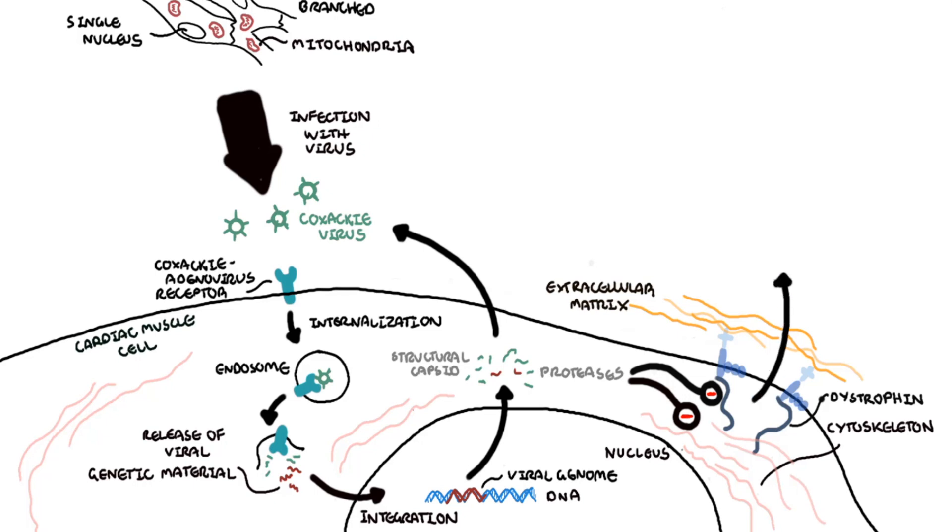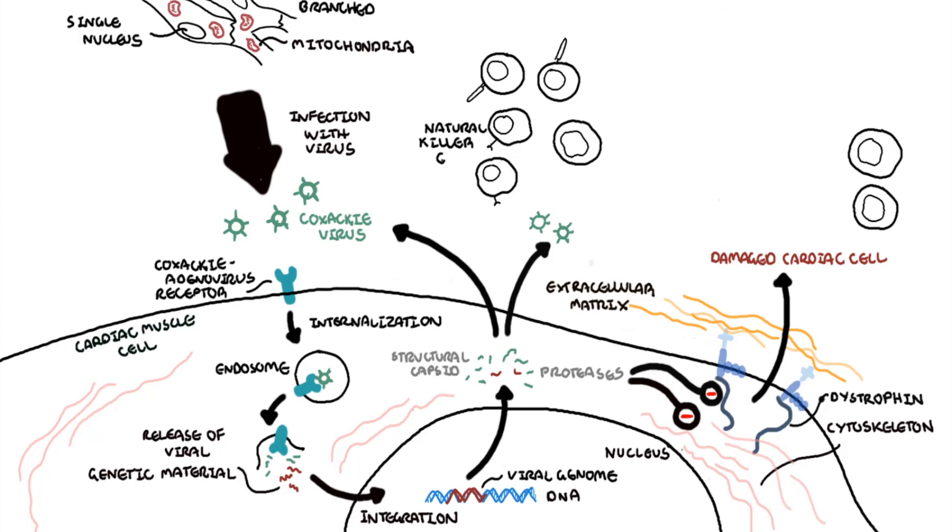Infection of the heart damages the heart. A damaged heart will release its cellular components to the extracellular space, and this will trigger the activation of the host's antiviral immune response, which is characterized by the infiltration of natural killer cells, macrophages, and then this will be followed by virus-specific T lymphocytes, T cells.